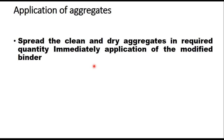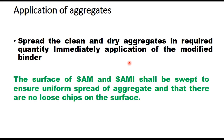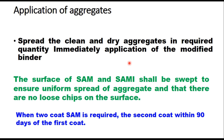After laying the geotextile, some loose bituminous material shall be sprinkled on it in the wheel path of the paver and tipper to ensure the fabric is not picked up between the wheels. When SAM or SAMI layer is used, after application of the binder, clean and dry aggregates are spread in the required quantity immediately. The surface shall be swept to ensure uniform spread of aggregates with no loose chips. When two-coat SAM is required, the second coat should be laid within 90 days of the first coat. Traffic may be opened over the SAMI layer two hours after rolling, but speed should be limited to 20 km/h.